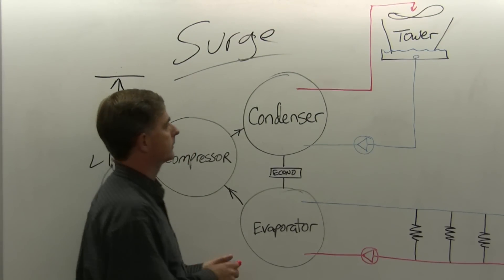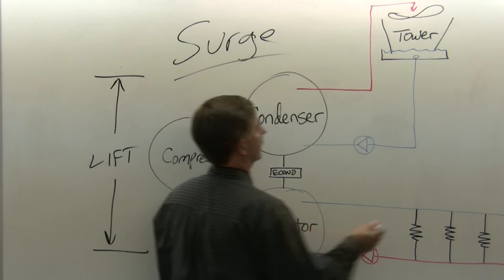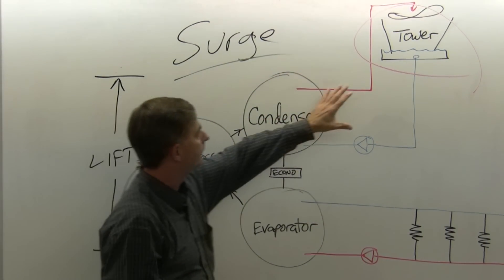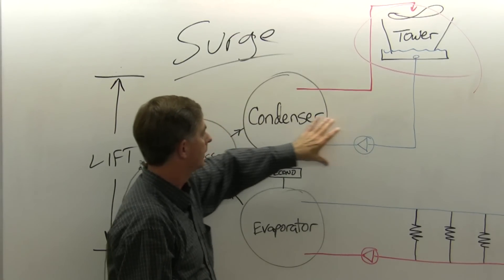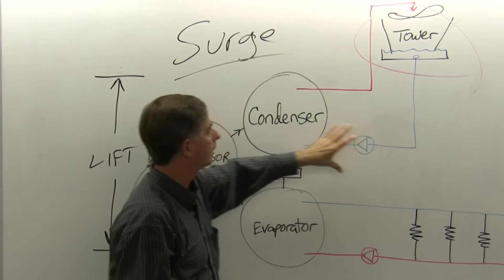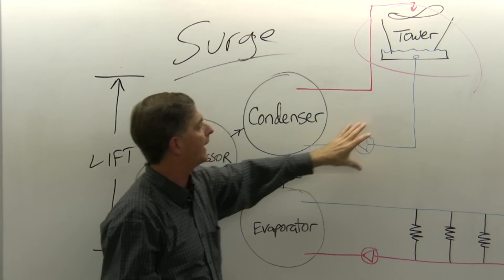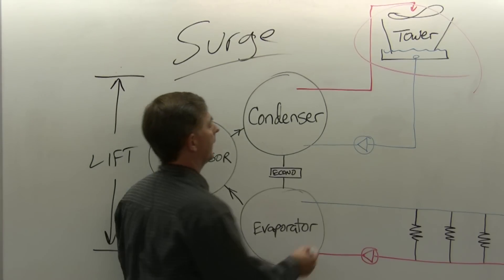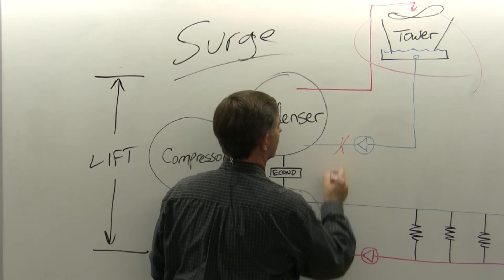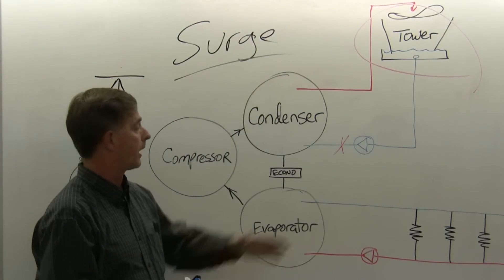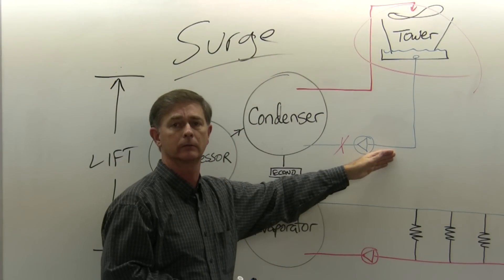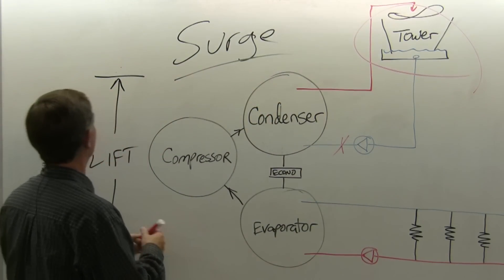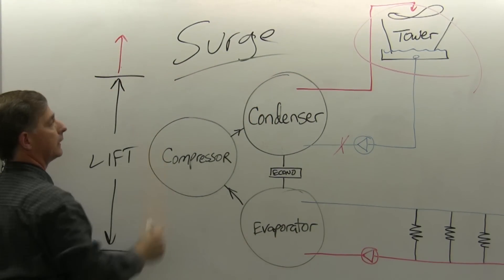One of the biggest causes of surge is right here with the cooling tower. If we have our water going through the tower and we have a reduction in flow, possibly a stopped up strainer, then the pressure in this condenser will rise and lead to surge.